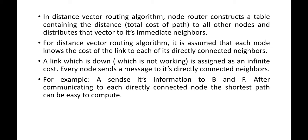Every node sends a message to its directly connected neighbors. For nodes that are indirectly connected or not reachable via different routes, the cost is assigned as infinity. For example, node A sends its information to B and F because they are its neighbors. After computing the cost to each directly connected node, the shortest path can be calculated by finding the minimum cost to each destination node.